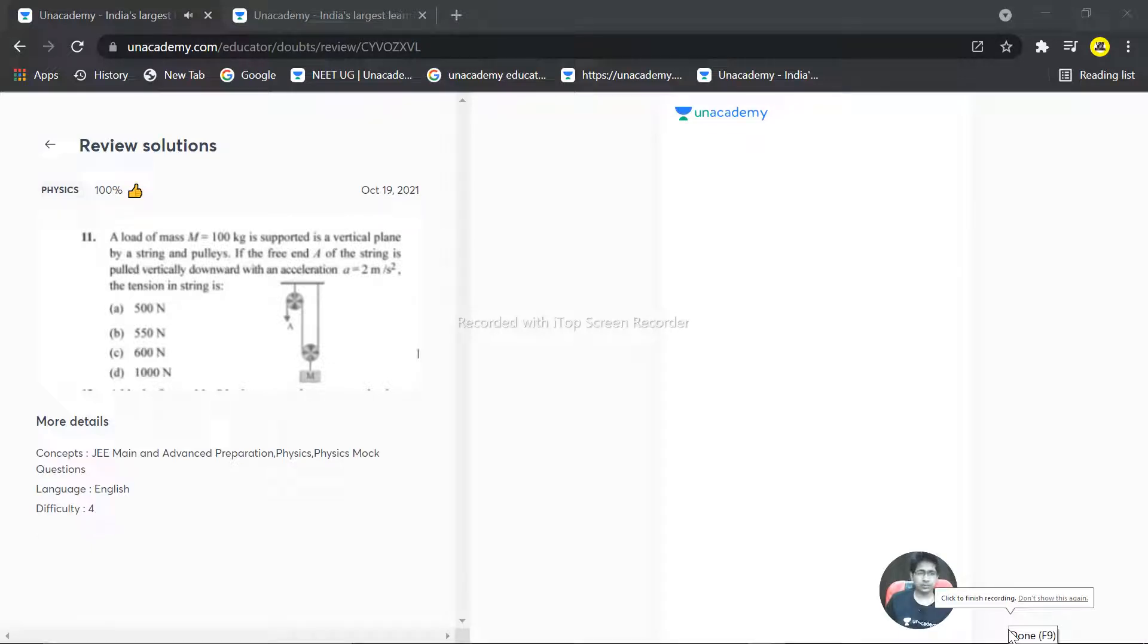We have a question over here: a load of mass 100 kilograms is supported by a vertical plane string and pulleys. If the free end of the string is vertically pulled down with an acceleration of 2 meters per second squared, what is the tension in the string?